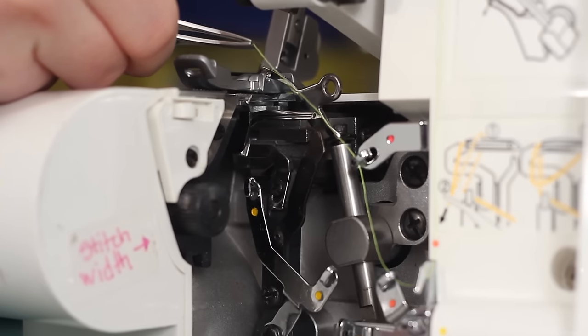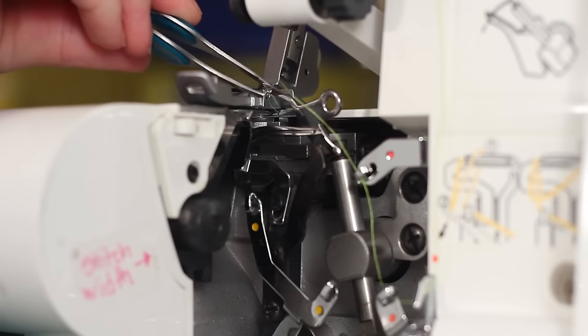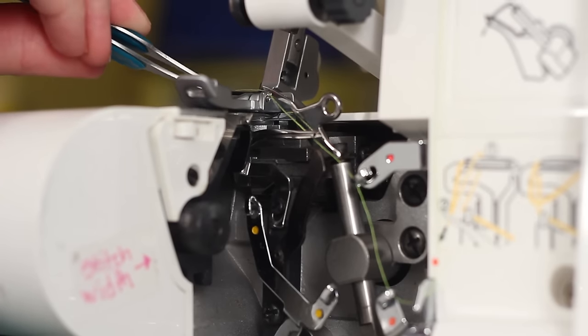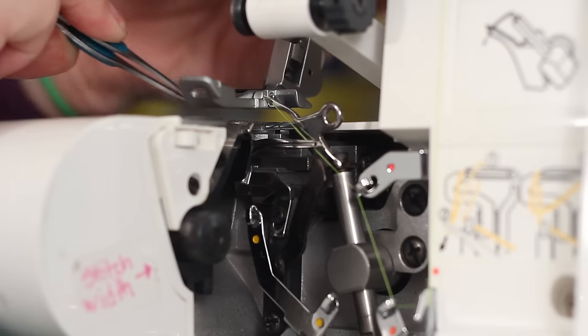Through the eye hole on the upper looper. Come from behind it and continue to pull the thread through. Then pull it under and to the side of the presser foot.